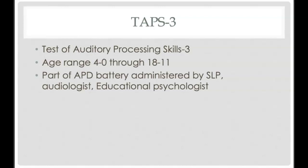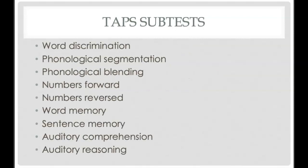The TAPS III — you may have already used it in the clinic. It covers a specific age range and is part of an APD battery administered by SLPs, audiologists, and sometimes educational psychologists. The subsets include word discrimination, phonological segmentation, blending, numbers forward, and numbers reversed. From those subsets, you can already identify that auditory processing has a memory component — the child has to remember the numbers.